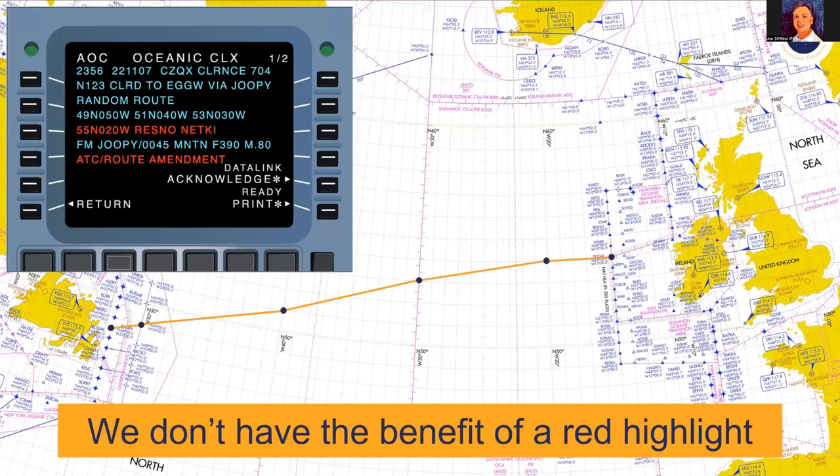A great system would be to highlight changed text in red, but that technology isn't available right now. We're using the red highlighting just to illustrate how important it is to get into the weeds and look at the details.